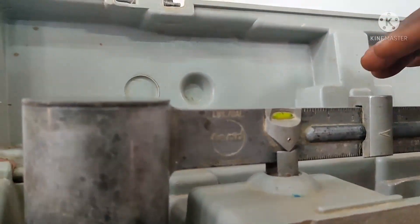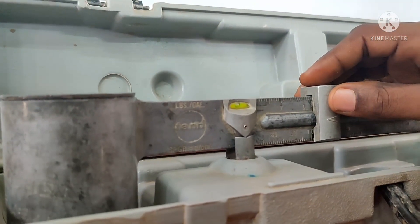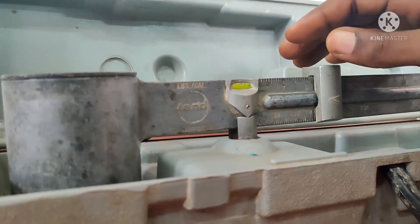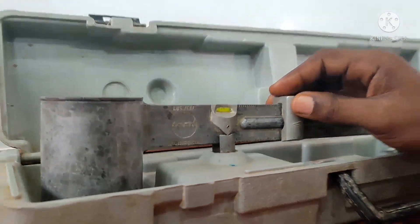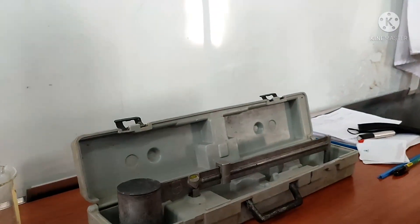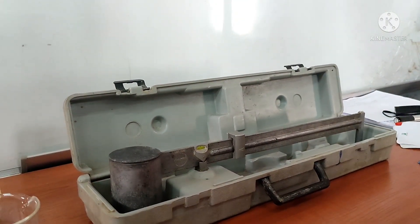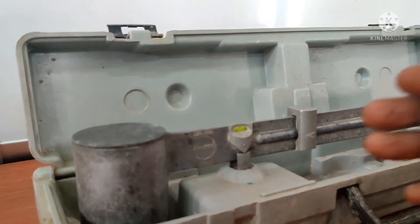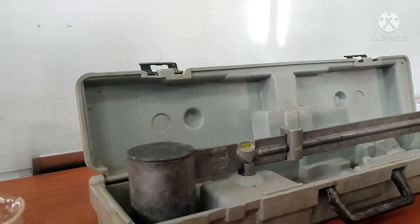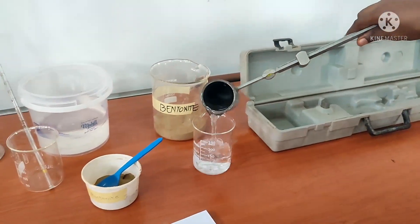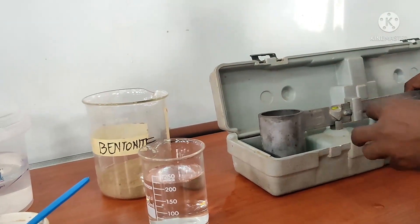And then we are allowed to balance. Now we have the bubble at the center of the knife edge. That means it is now calibrated. So the next thing after calibration is that we will discard the water and then move to the determination of the mud density.